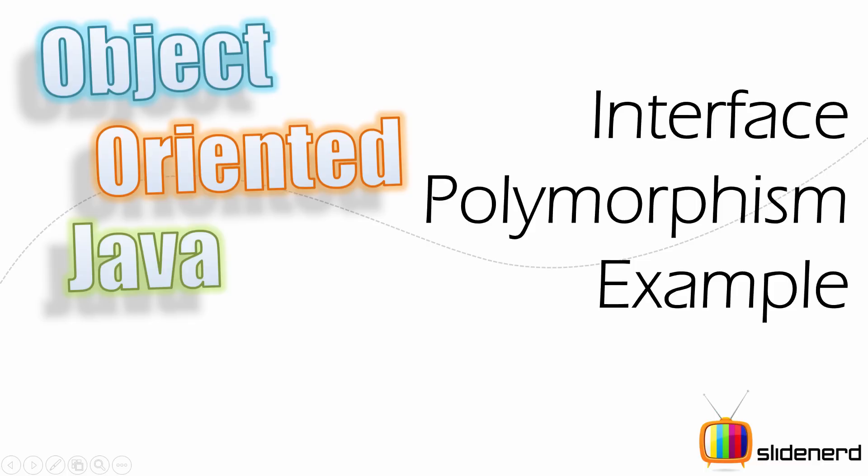Hi subscribers and watchers, what's up? It's me, Vives from SlideNerd here. In the previous video, we talked about the theory behind interfaces and polymorphism. Most of you couldn't really figure out what was going on because we didn't go into examples. In this video, let's take a look at the examples, and then you can revisit the previous video again to make things clearer.